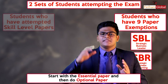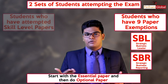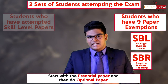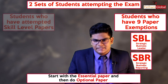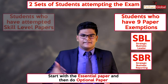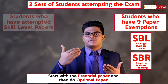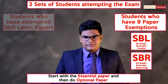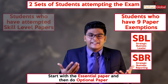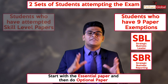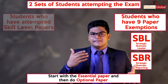After completing the essential papers, you can choose the optional papers depending on what you've done. For example, if you choose SBR first, then you can move to AAA, then SBL, and then the remaining optional papers — similar to category one. You can also go for any of the other optional papers depending on your interests.